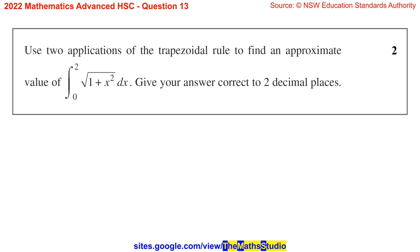Question 13. Use two applications of the trapezoidal rule to find an approximate value of the integral from x equals 0 to x equals 2 of the square root of 1 plus x squared dx. Give your answer correct to two decimal places.